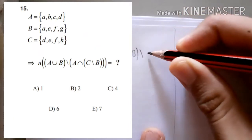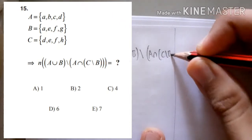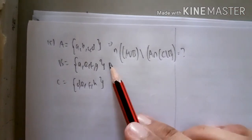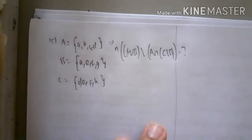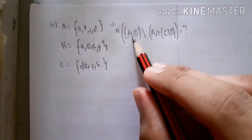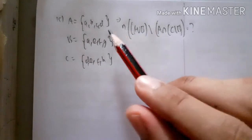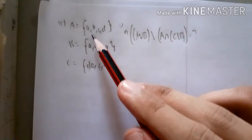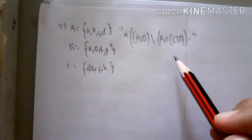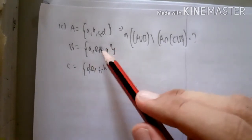For this setup we need to understand the symbol of each operation. Union means you combine elements together. Intersection means the elements common to both sets. Complement means the elements that are not inside the other set.